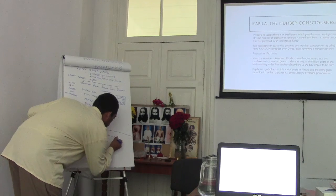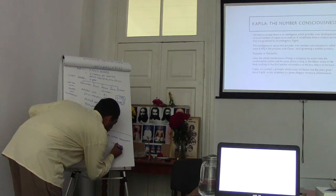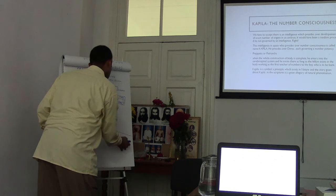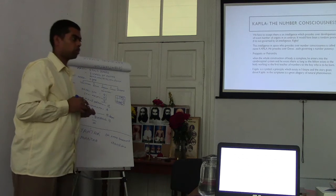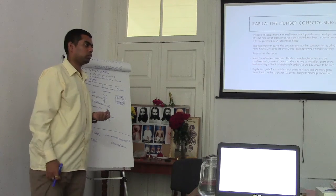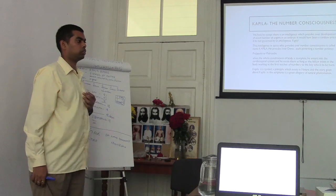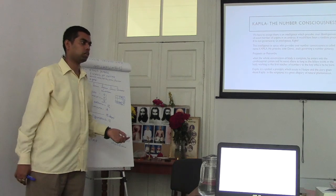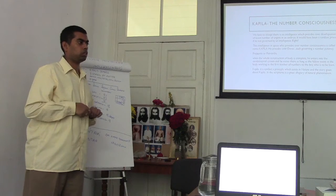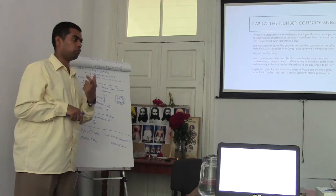And they have given a mantra: Om Namo Bhagavate Vasudevaya. So there are 12 letters in this mantra. And each letter represents one zodiac sign. And each letter represents the time form of God. Also, each letter of this mantra is meditated upon one part of the body which indicates the zodiac sign.